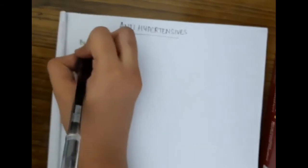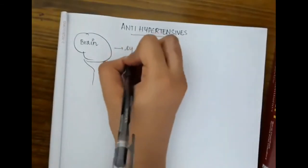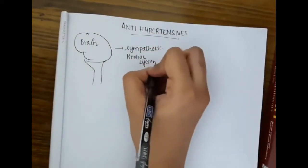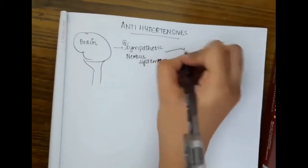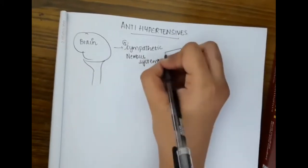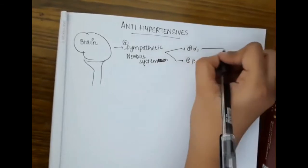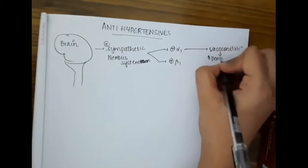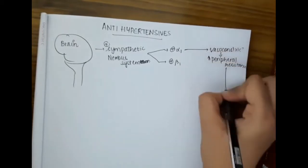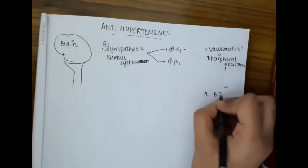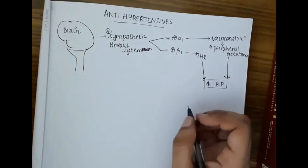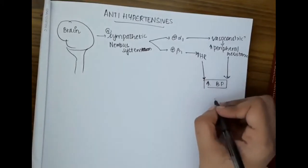Hello friends, let us now learn some important points about antihypertensives. In the antihypertension brain, whenever the sympathetic nervous system is activated, it activates alpha-1 receptors and beta-1 receptors. Alpha-1 receptor activation causes vasoconstriction, thus increasing peripheral resistance, which increases BP. Beta-1 receptors cause increased heart rate, which again increases BP.